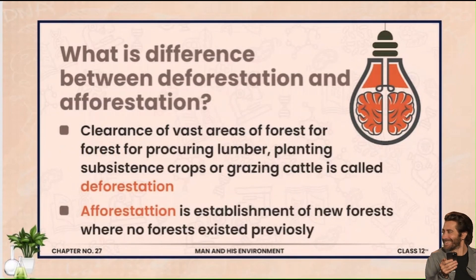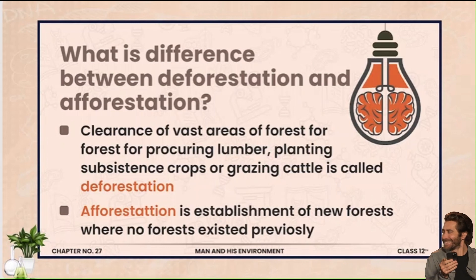Next: what is the difference between deforestation and afforestation? Deforestation: ek specific area jahan pehle se forest tha, wahaan se trees ki cutting down karna shuru karna — taake vast area hamare paas aa jaaye jahan hum residential areas bana sakein, cropping kar sakein ya aur koi use kar sakein. Is phenomenon ko deforestation kehte hain. Afforestation yeh hai: ek aisi jagah pe janglaat lagana jahan pehle se forest nahi the. Aur agar aisi jagah pehle forest tha jo disturb ho gaya aur dubara laga rahe hain, to that will be called reforestation.